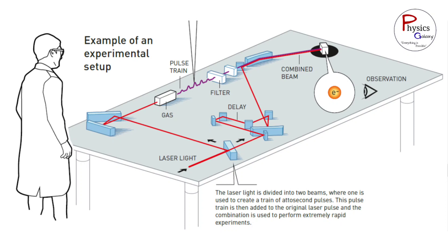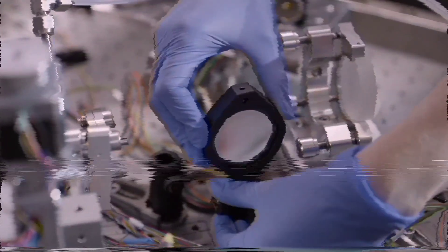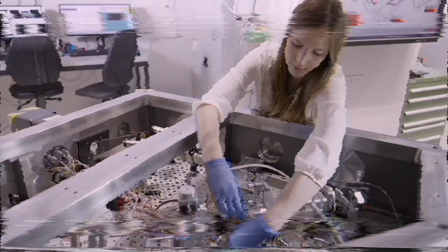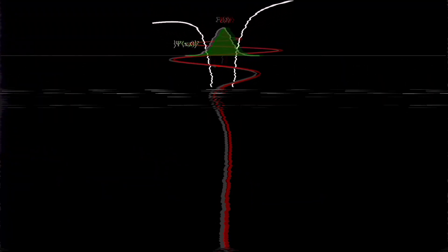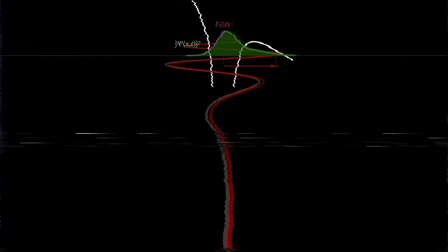The pulse train generates attosecond pulses, the filter selects specific wavelengths, the delay adjusts the timing and the combined beam combines the two. The observation point measures the attosecond pulses interaction with target atoms or molecules. This setup allows for control over electron dynamics, revealing insights into ionization, excitation, emission and scattering.